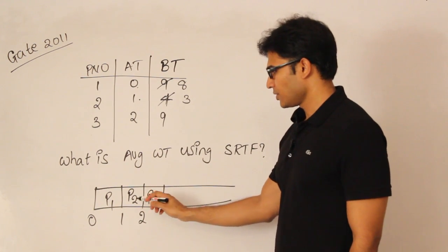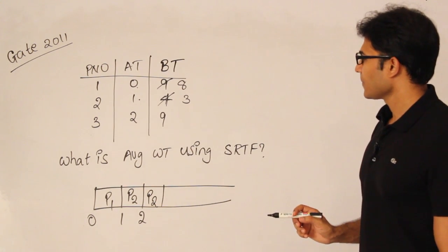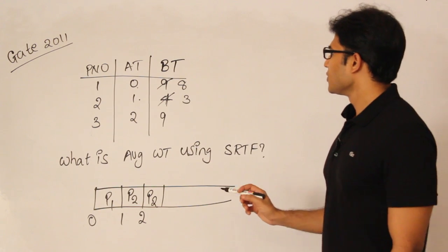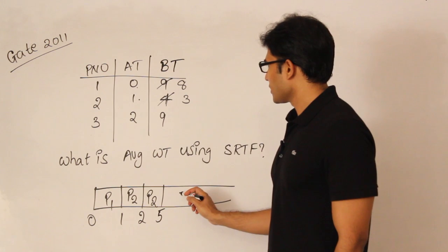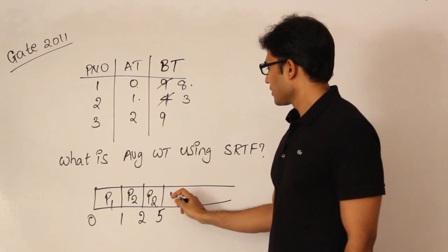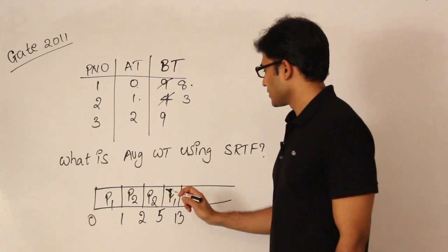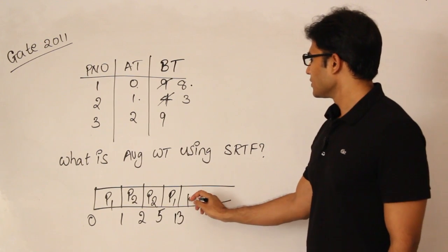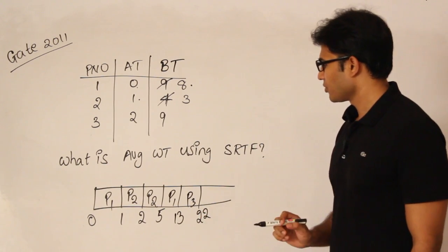It continues running continuously without any preemption. P2 will run for 3 more, so it finishes at 5. Next, P1 will run for 8, therefore it finishes at 13. Then P3 will run for 9, therefore it finishes at 22.